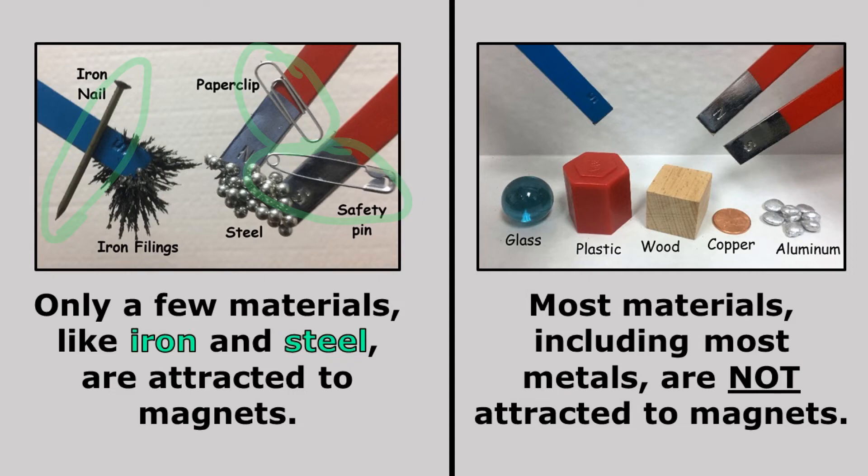All metals are conductors, but not all metals are magnetic. So it's very important that you understand that just because something is a metal does not mean that it will be attracted to a magnet.